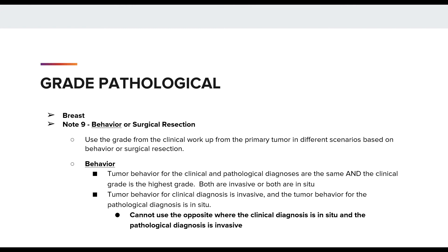Next is the behavior or surgical resection note. This is note 9 for the breast schema, but it may be a different note number for a different site schema — for example, it is note 7 for prostate. Beginning with the behavior component of this note, you may use the grade from the clinical workup from the primary tumor when the tumor behavior for the clinical and pathological diagnosis are the same and the clinical grade is the highest grade — so both are invasive or both are in situ. The second bullet states you may use the grade from the clinical workup within the grade pathological when the tumor behavior from the clinical diagnosis is invasive and the tumor from the pathological diagnosis is in situ, but you cannot do the opposite.